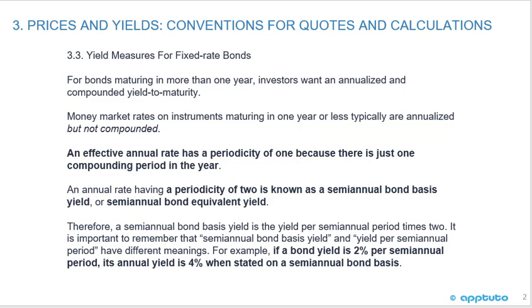For example, if a bond yield is 2% per semiannual period, its annual yield is 4% when stated on a semiannual bond basis.